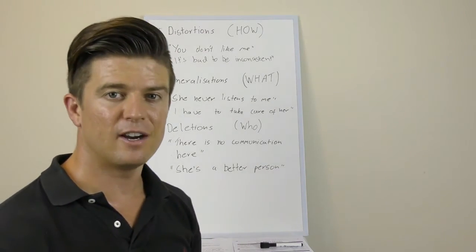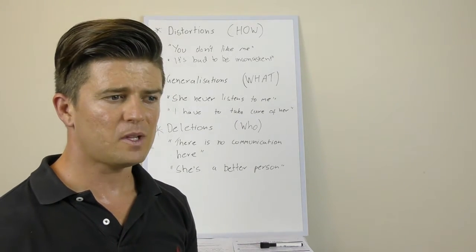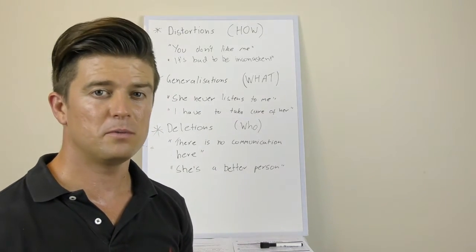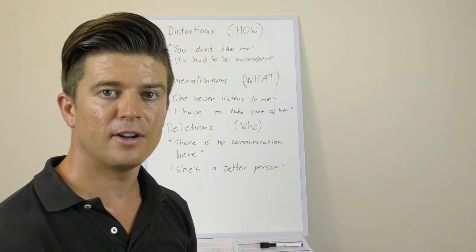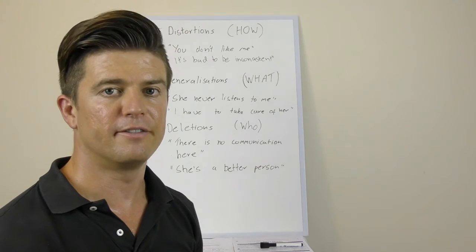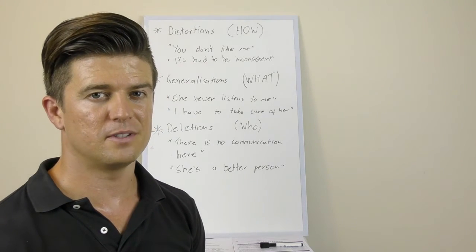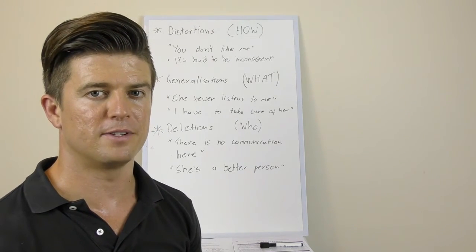The next one is I have to take care of her. So again because we're dealing with that absolute language we want to offer some counters so we can get some more information. So what would happen if you did take care of her, what would happen if you didn't take care of her. So you've got those two options and then we can figure out a little bit more of where that person's coming from.